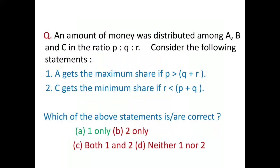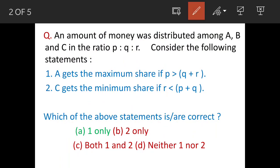We will see a question of ratios today. The question is shown. There are three people A, B, and C, and they are distributed money in the proportion of p is to q is to r.